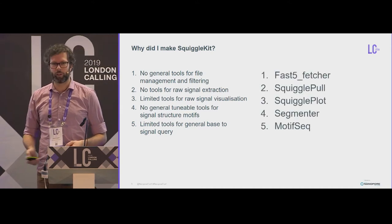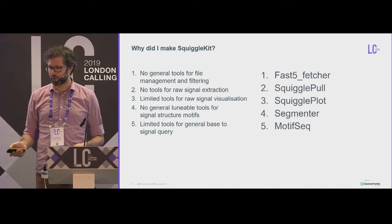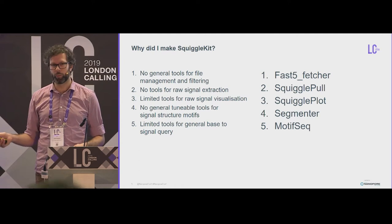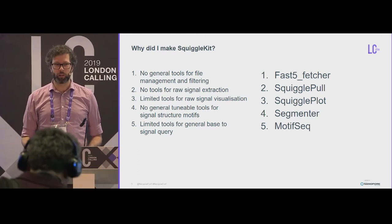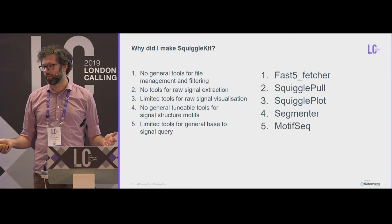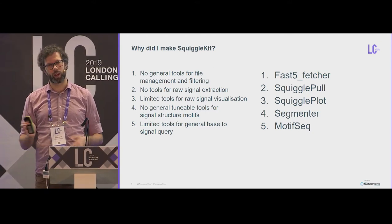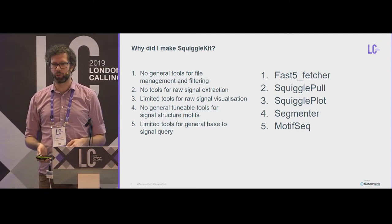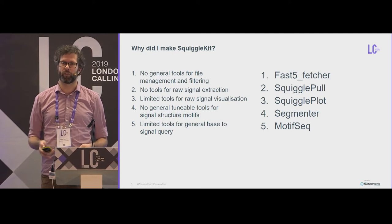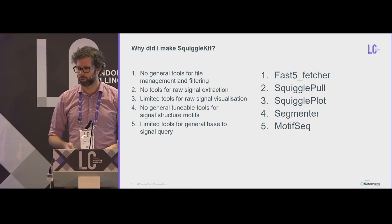So I made these five tools. Fast5 Fetcher to manage your data. SquigglePull to pull your squiggles. SquigglePlot to show them. And Segmenter to cut up your reads. And MotifSeq is a kind of Control-F for signal or blast in signal space.